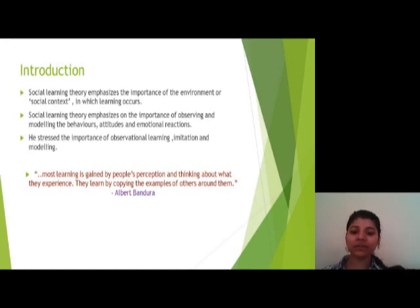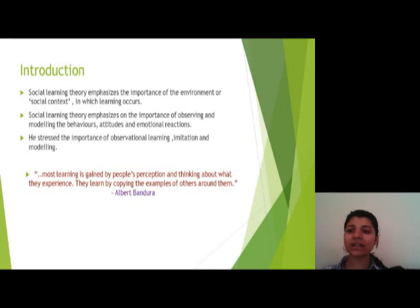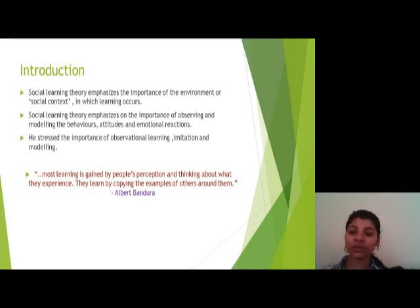When a particular behavior is rewarded regularly, it will most likely persist. Conversely, if a particular behavior is constantly punished, it will most likely desist. Social learning theory emphasizes the importance of the environment or social context in which learning occurs, and the importance of observing and modeling the behaviors, attitudes, and emotional reactions.